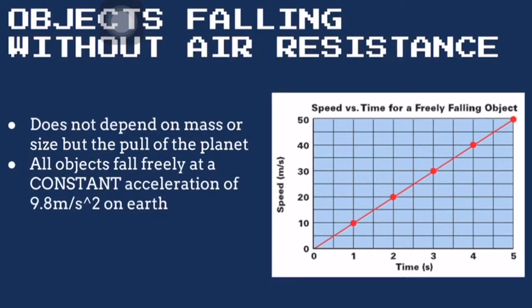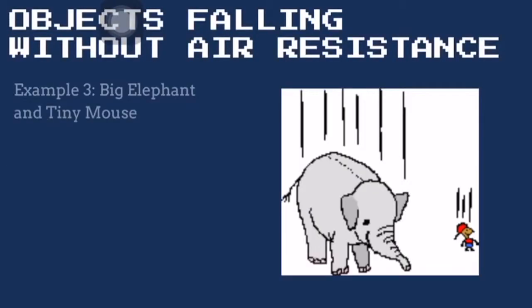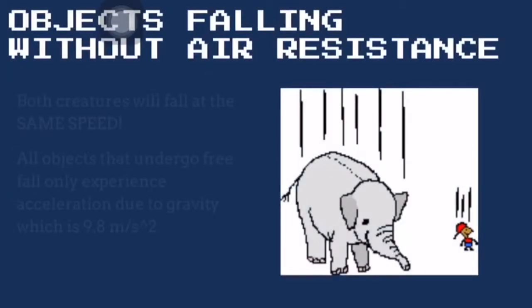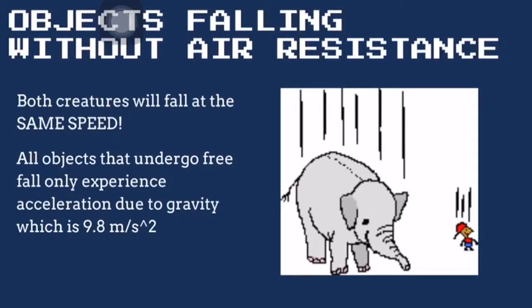The figure shown describes the velocity-time graph for the motion of a freely falling object. Given that both an elephant and a mouse are experiencing freefall, will the 300 kg elephant fall faster than a 3 kg mouse? The answer is no — both creatures will fall at the same speed, since all objects undergoing freefall experience an acceleration of 9.8 m/s² due to Earth's gravity.